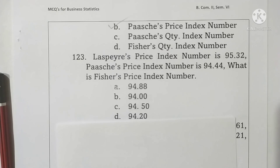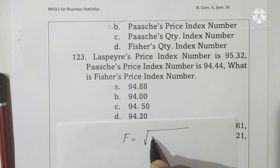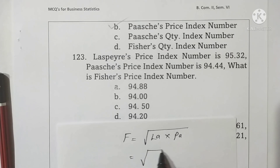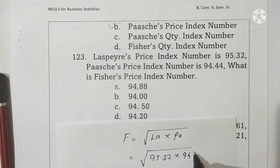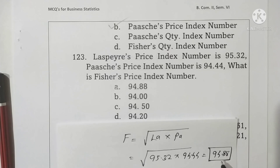Question 123: Laspeyre's price index number is 95.32 and Paasche's price index number is 94.44. What is Fisher's price index number? We know Fisher's price index number is the square root of Laspeyre's multiplied by Paasche's index number. Putting the values — square root of 95.32 into 94.44 — the answer is 94.88. Students may use the calculator. Option C is correct.